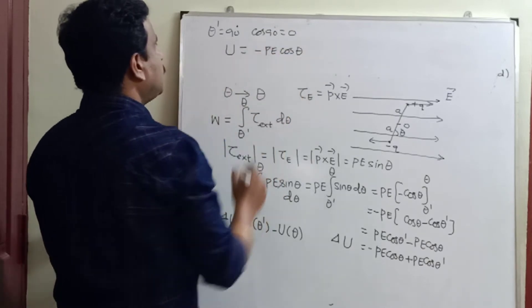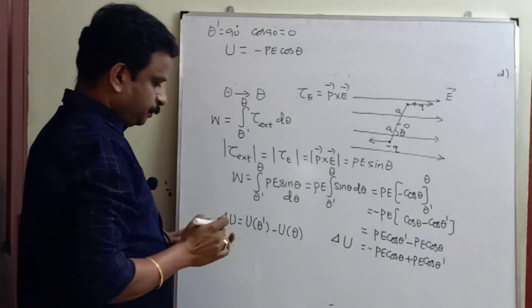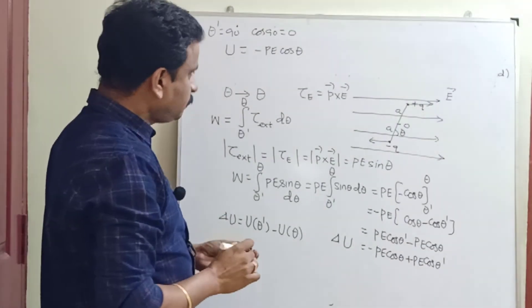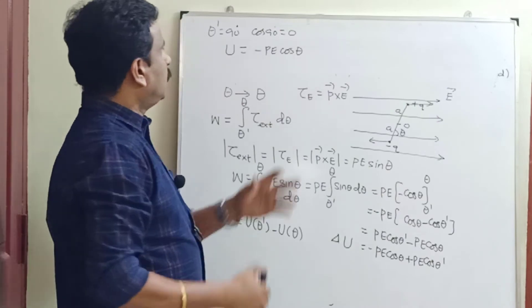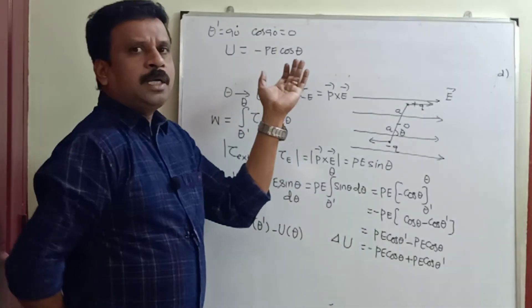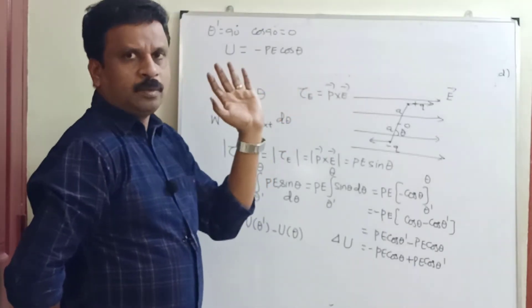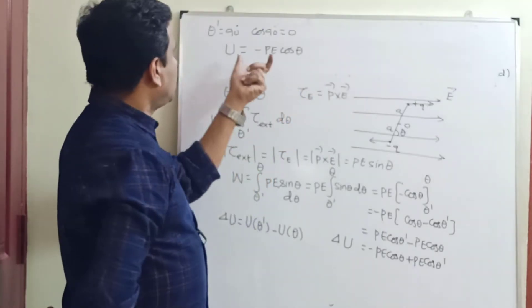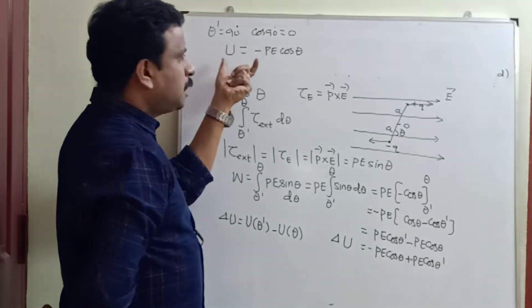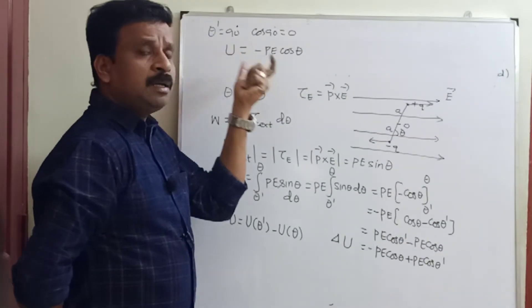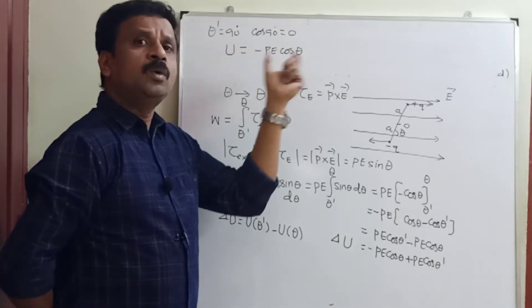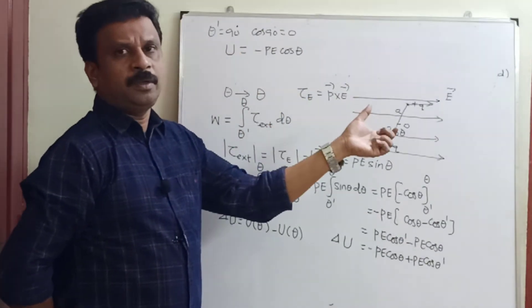Therefore, U is equal to minus pE cos theta. So this is the energy stored — the electrostatic potential energy of the dipole in a uniform electric field.